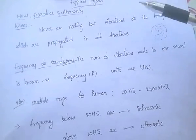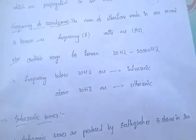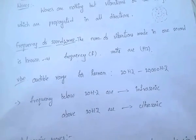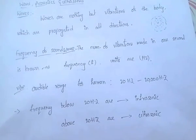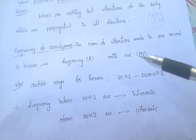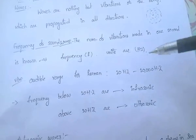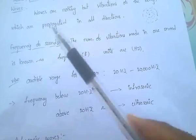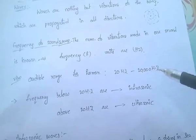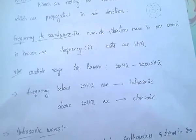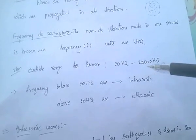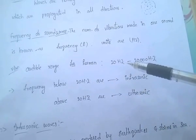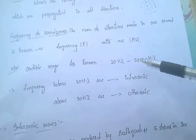The frequency of sound waves — the number of vibrations made in one second is known as frequency. The units for frequency are hertz. The audible range for humans is between 20 hertz to 20,000 hertz, that is 20 Hz to 20 kHz. A human can only hear sound waves whose frequency is between 20 Hz to 20,000 Hz.